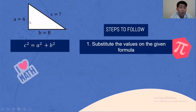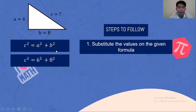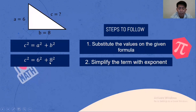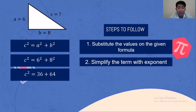The value for A is 6 and the value for B is 8. Step two: simplify the terms with exponents. We simplify 6 raised to 2 and 8 raised to 2. What is 6 times 6? That is 36. What is 8 times 8? That is 64.